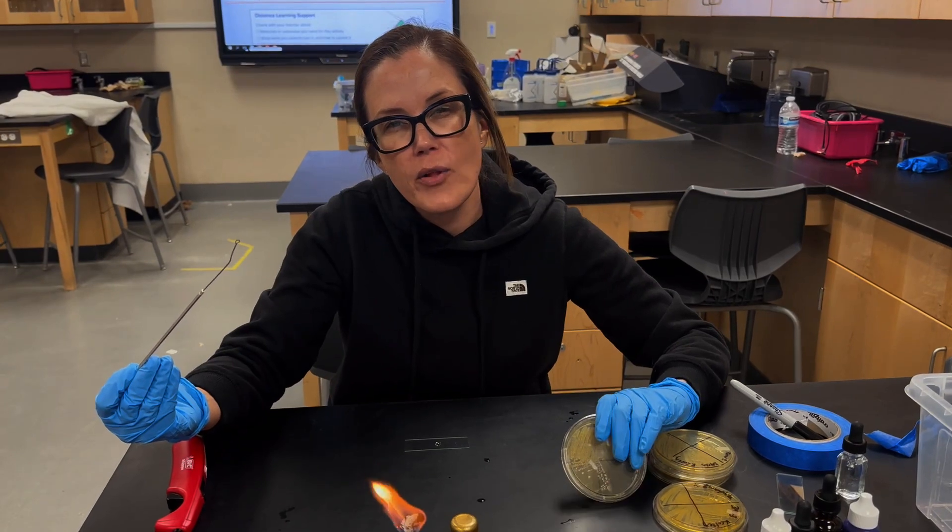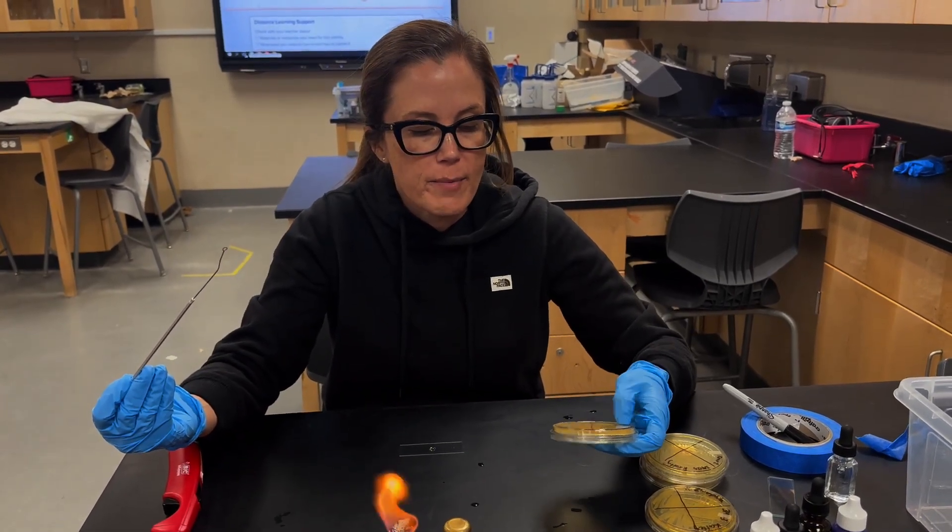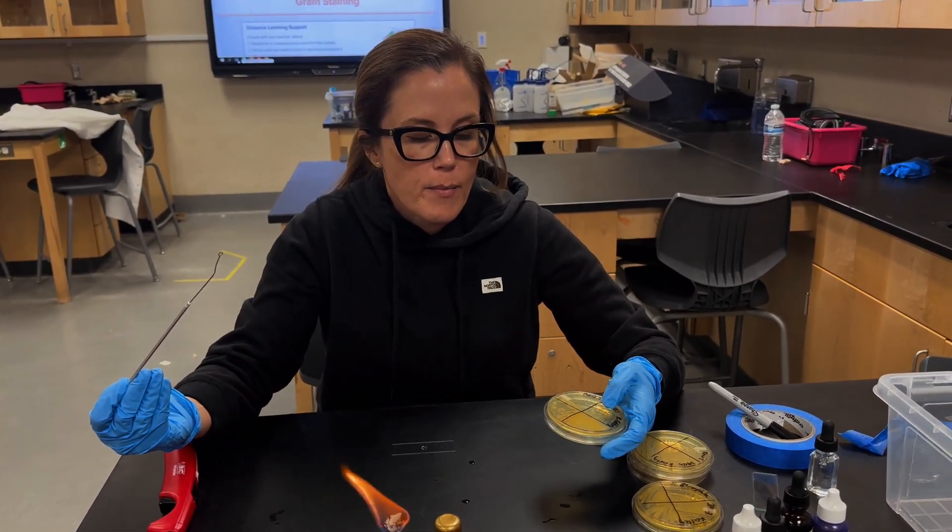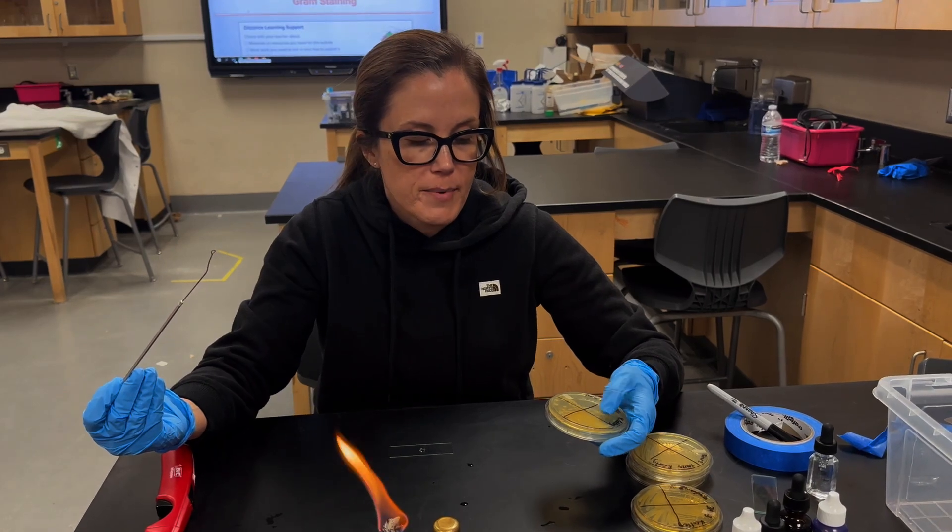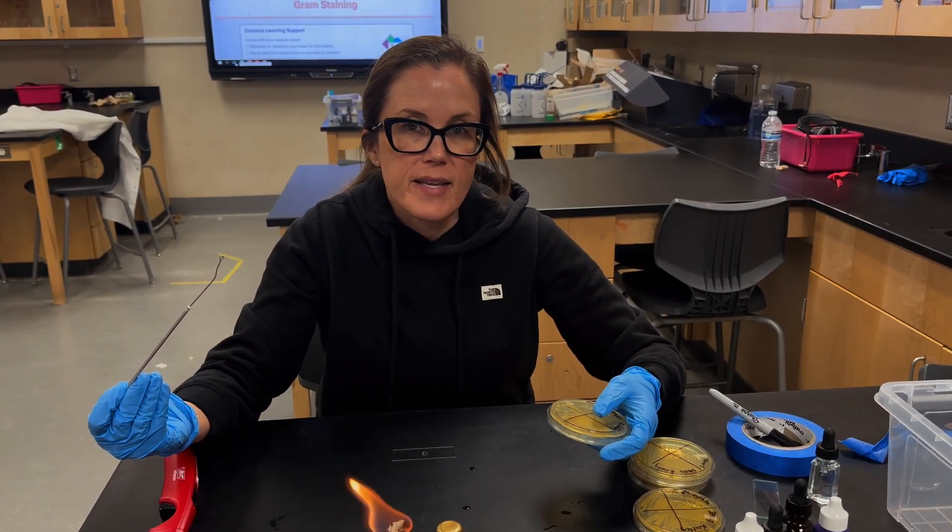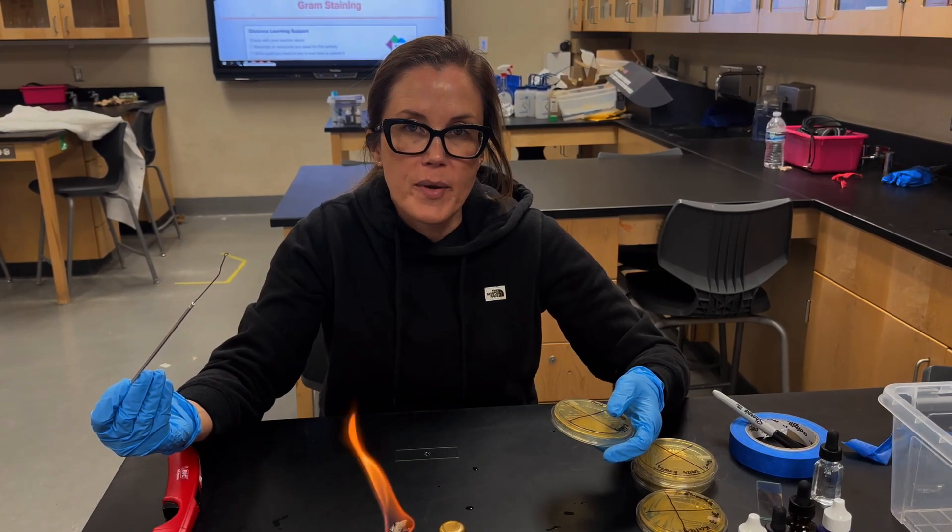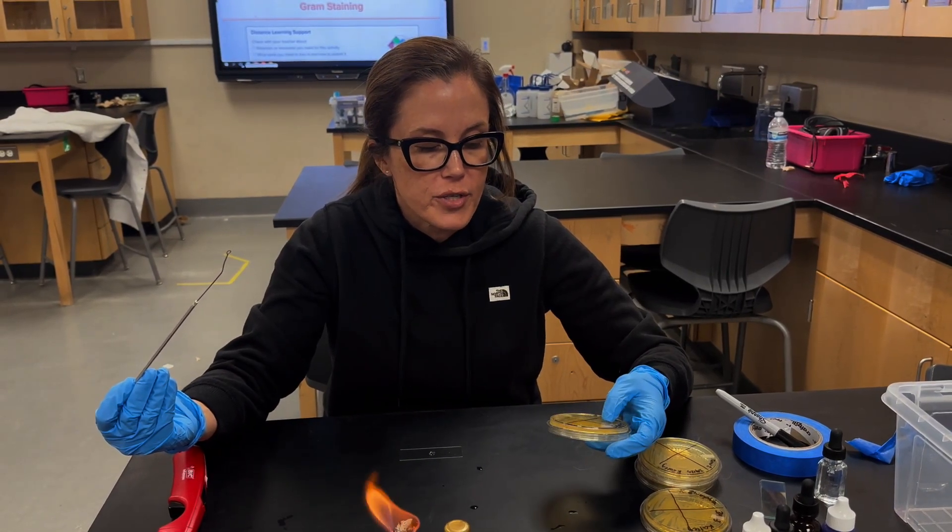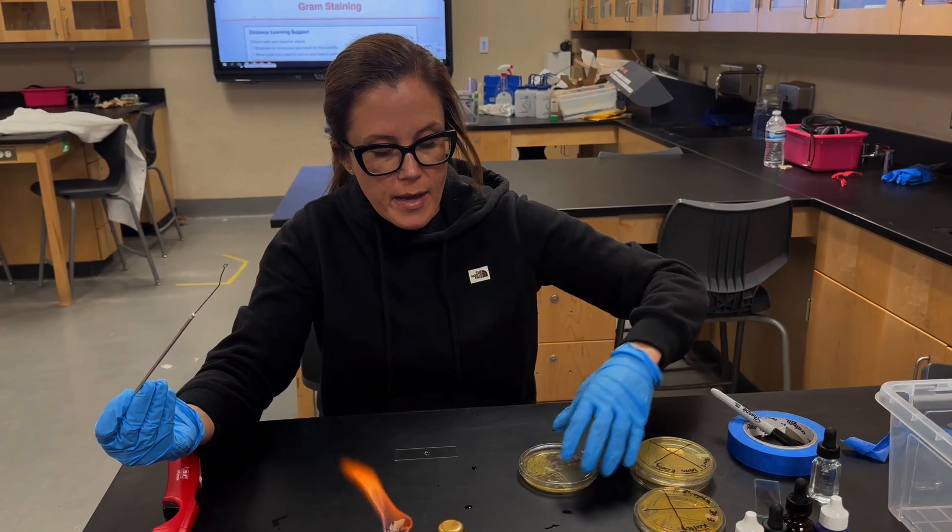The reason we're taking the yellow colonies is because that's the one that we believe is responsible for what's causing the patients to be ill at the hospital. Remember all 11 hospital patients had this yellow colony in common when we did the gross morphology of the bacteria.